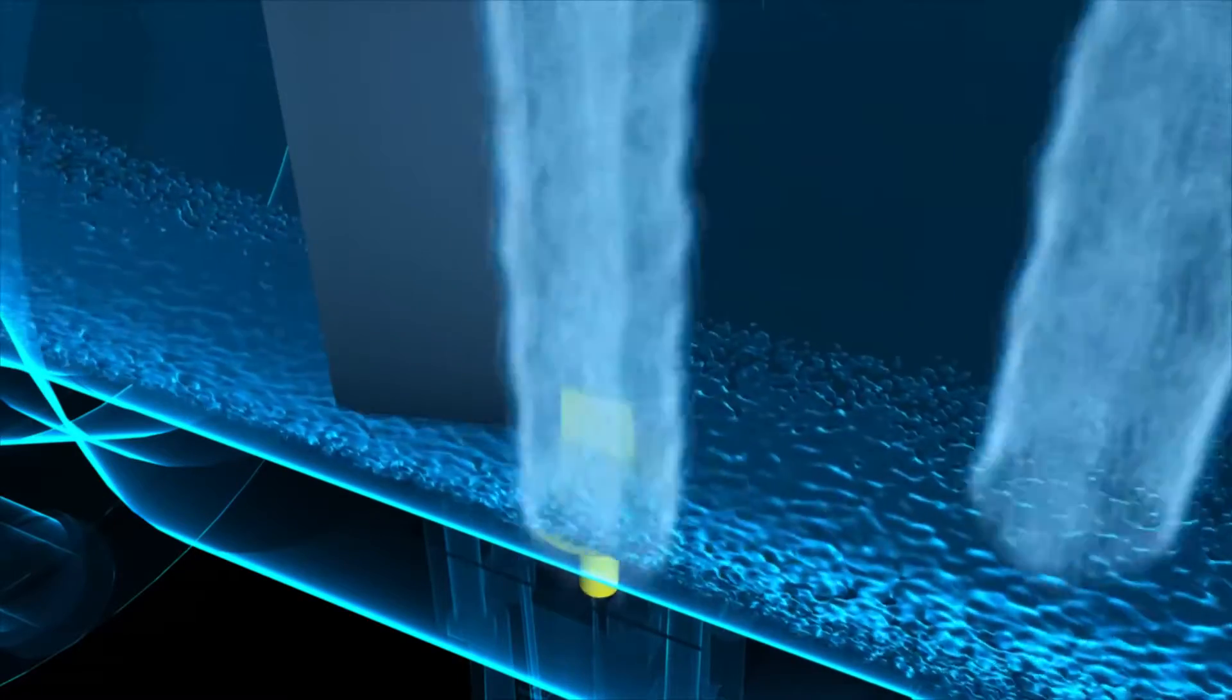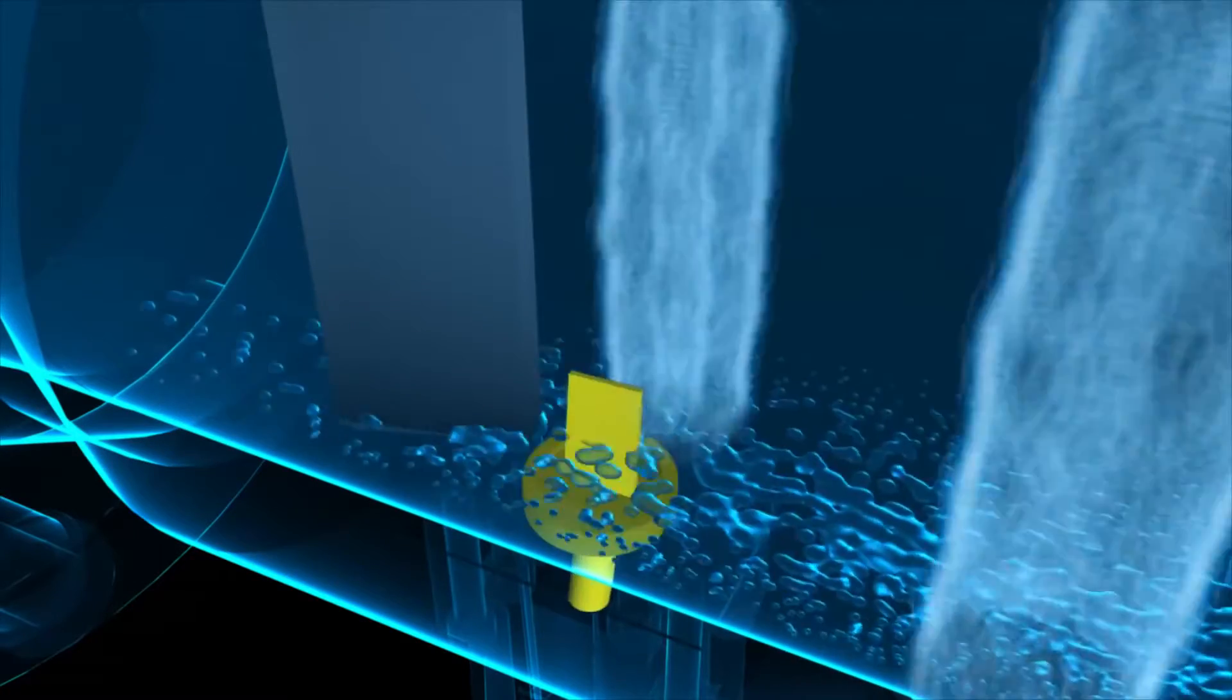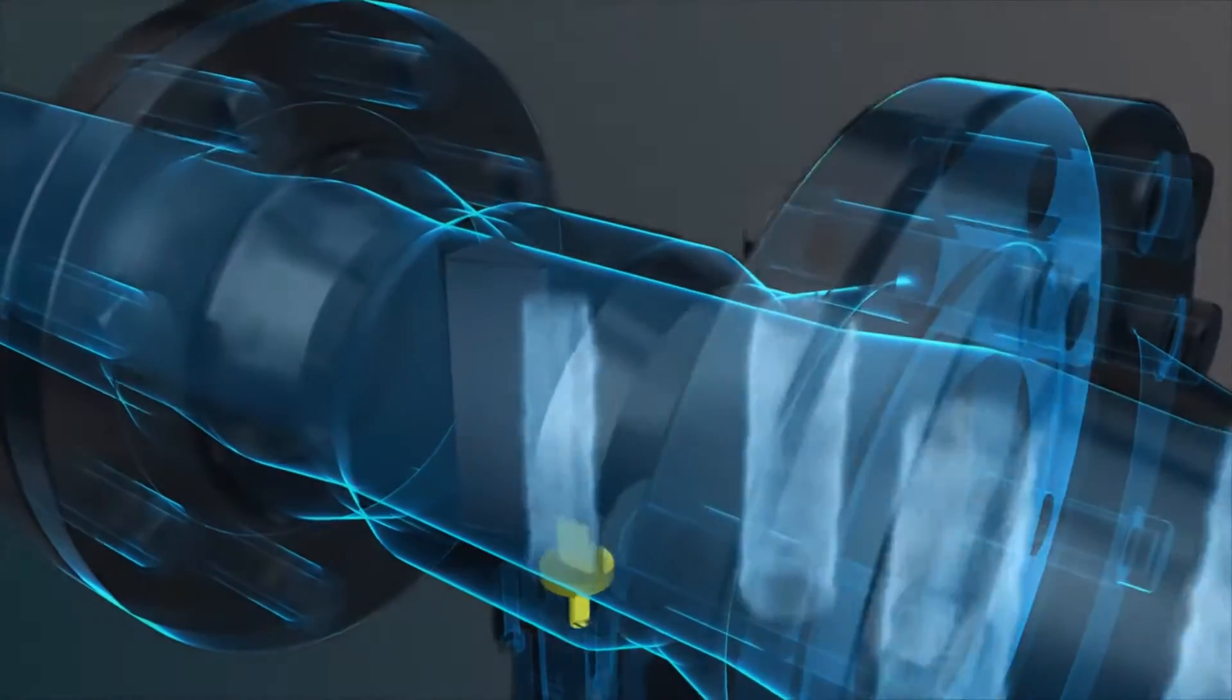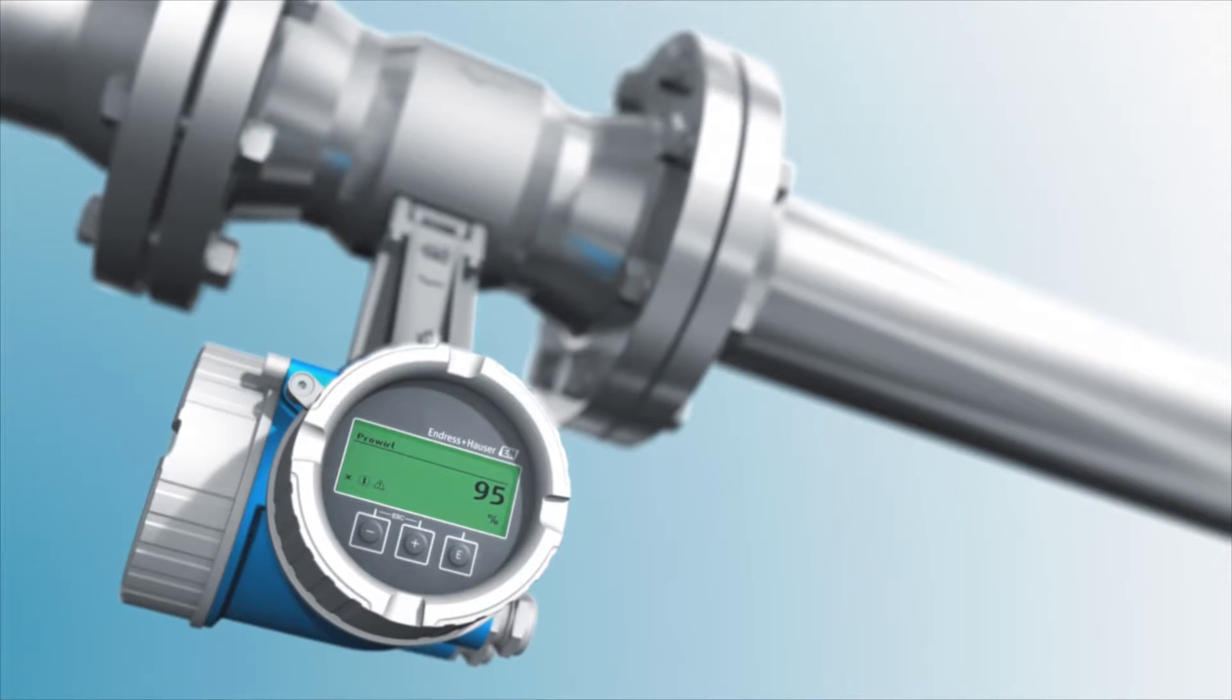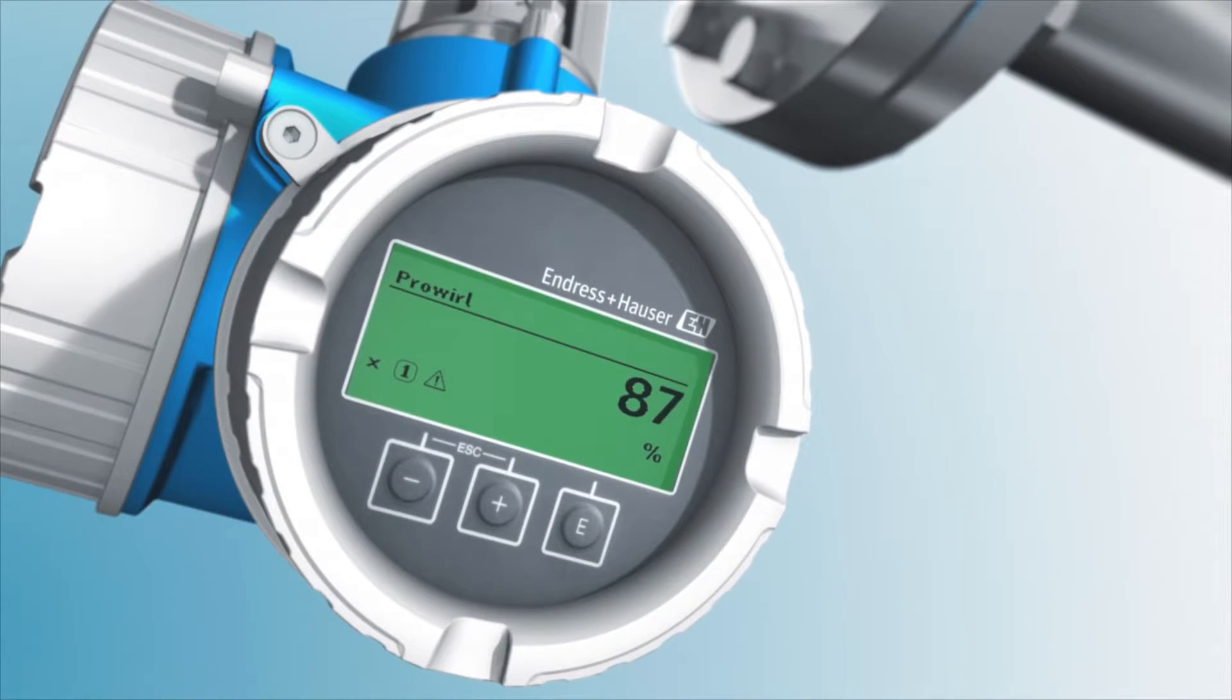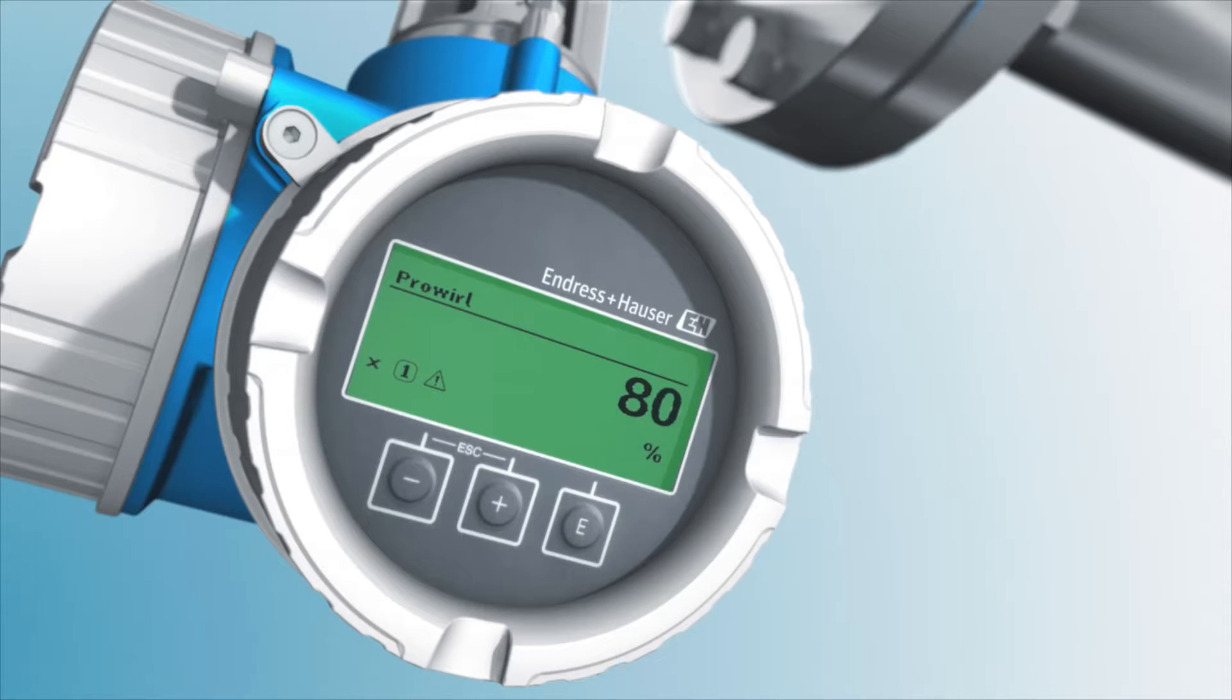Consequently, Prowold 200 can directly measure not only the steam's dryness fraction, but also the corrected actual amount of steam. These measured values, dryness fraction and actual amount of steam, are permanently shown on the device display. If the dryness fraction of the steam falls below a specific freely selectable value, though with a minimum limit of 80%, then Prowold 200 generates an automatic warning signal. This means you are always aware of the condition of the steam in your pipe, and also able to decide whether specific countermeasures are necessary.